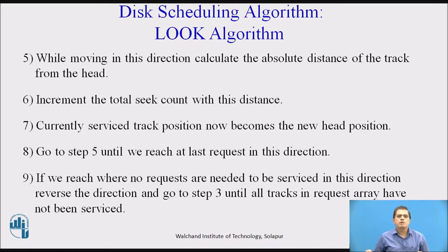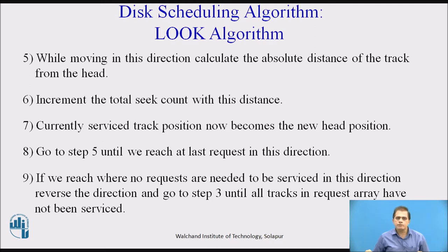Step 5 — while moving in this direction, calculate the absolute distance of the track from the head. Step 6 — increment the total seek count with this distance. Step 7 — the currently serviced track position becomes the new head position. Step 8 — go to step 5 and repeat until we reach the last request in this direction. Step 9 — if no more requests need to be serviced in this direction, reverse direction and go to step 3 until all tracks in the request array have been serviced.